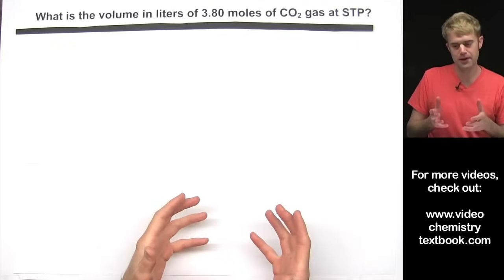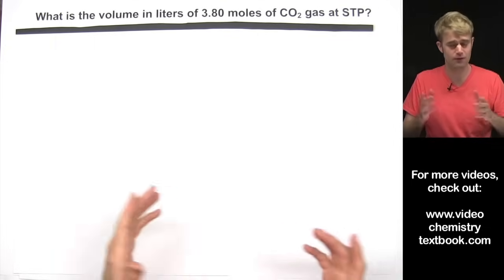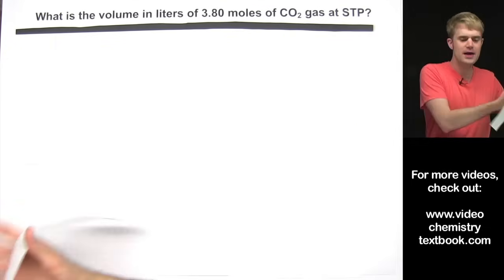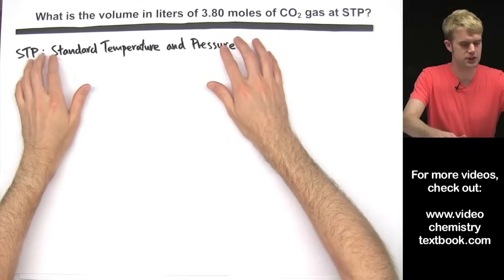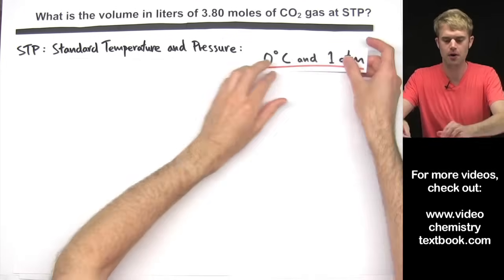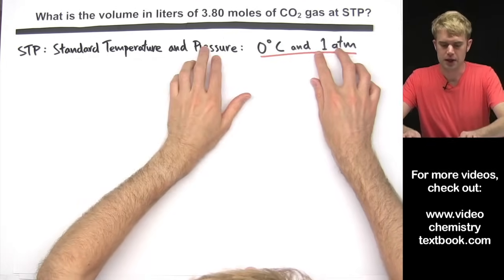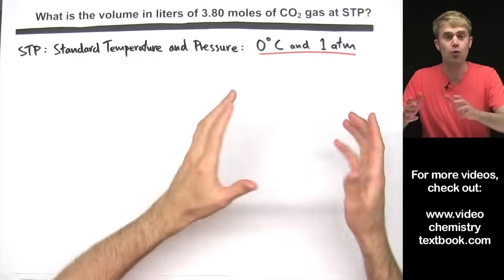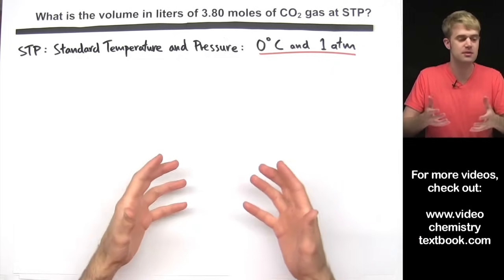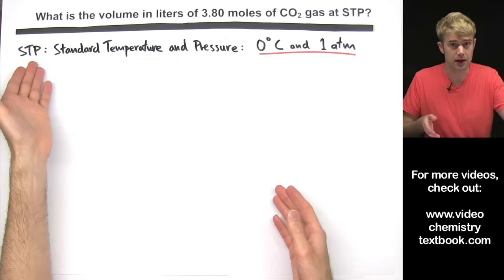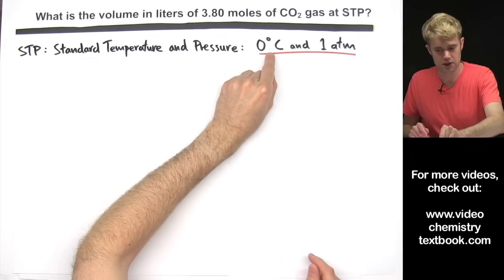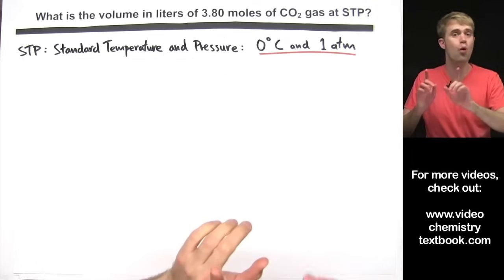Let's talk about some information that's going to help us solve this problem. First off, what's STP? STP is an abbreviation for Standard Temperature and Pressure — 0 degrees Celsius and 1 atm. So whenever we're talking about something that takes place at STP, the temperature is 0 degrees Celsius and the pressure is 1 atm.